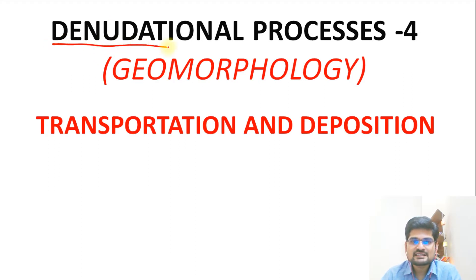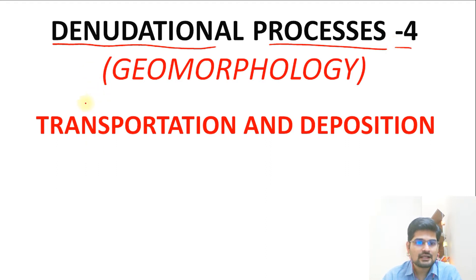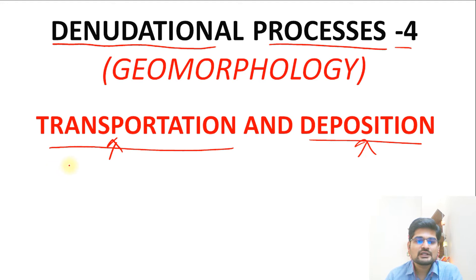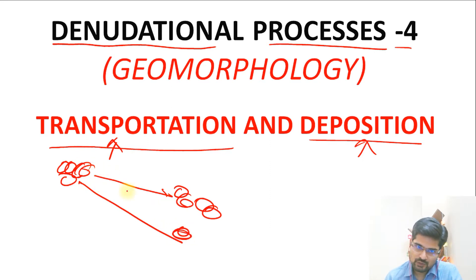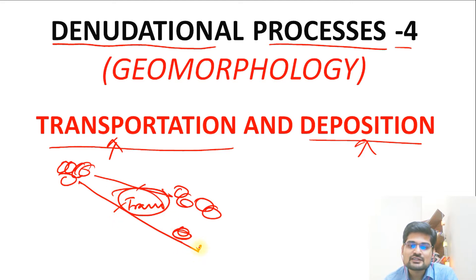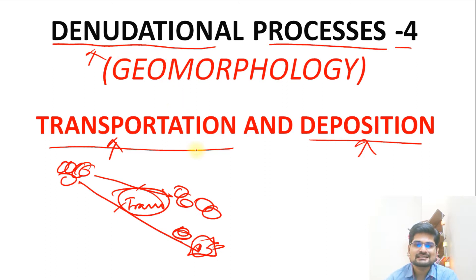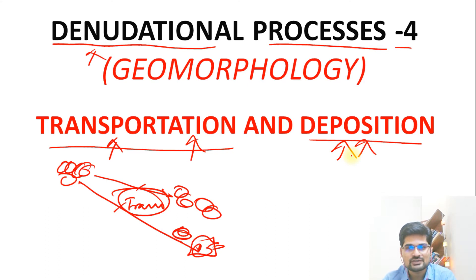We have already learned about the previous three denudational processes — weathering, erosion, and mass wasting. Today in the fourth and last part, we are going to study transportation and deposition. In weathering, material disintegrates in place; in erosion, it is transported from one place to another; and in mass wasting, gravity drives that movement.